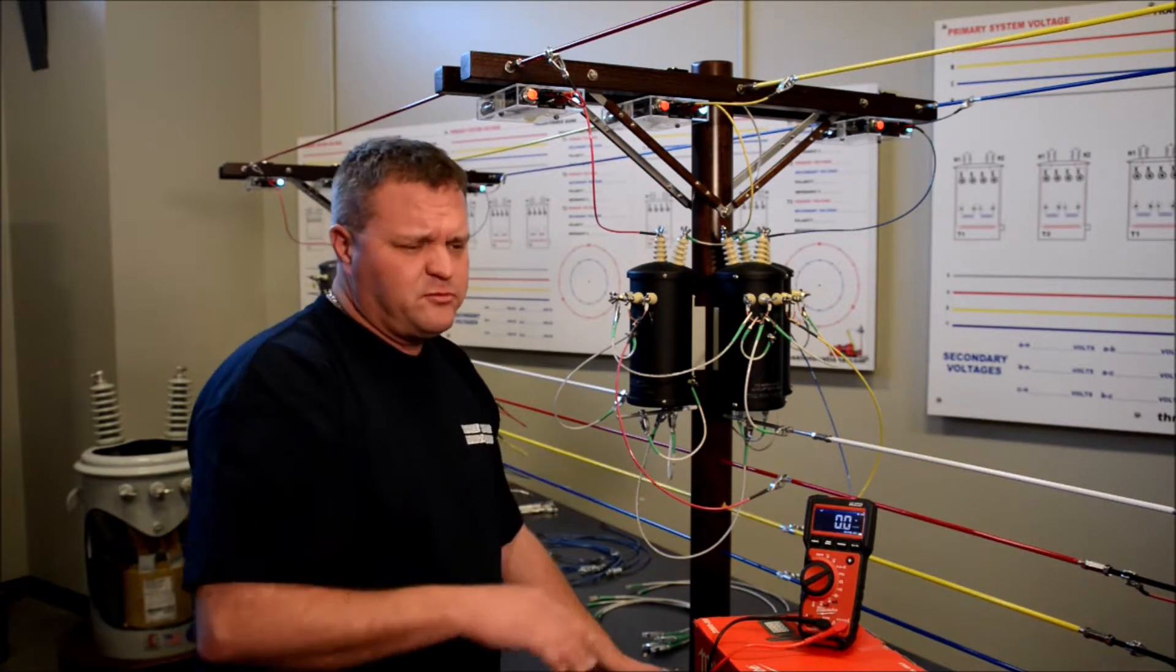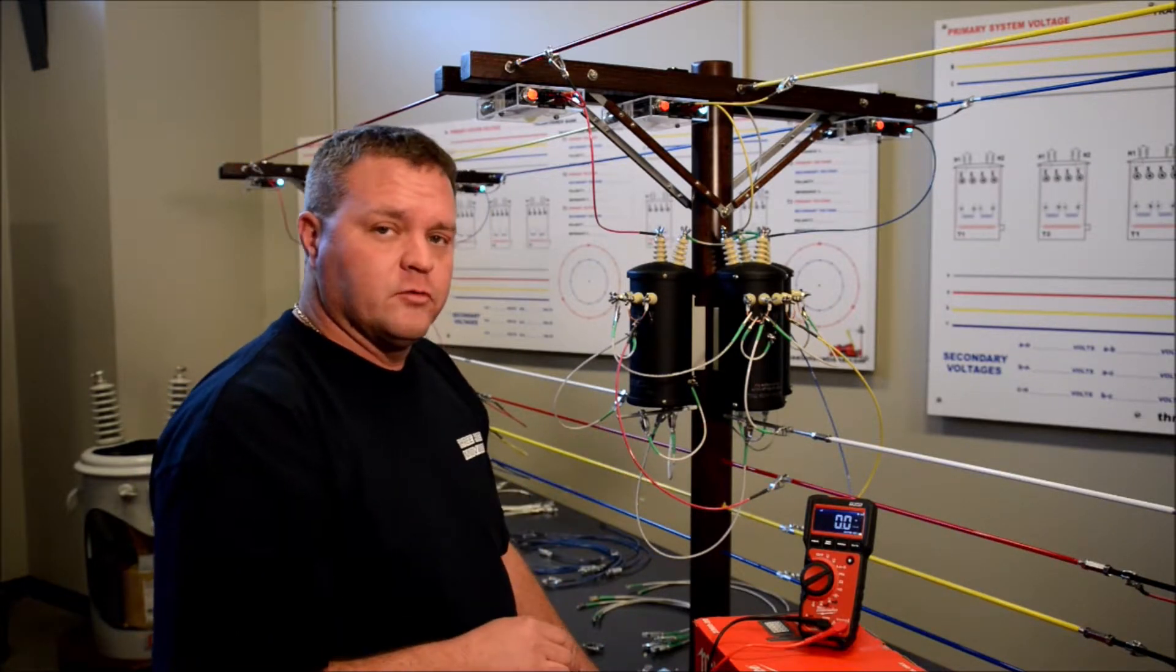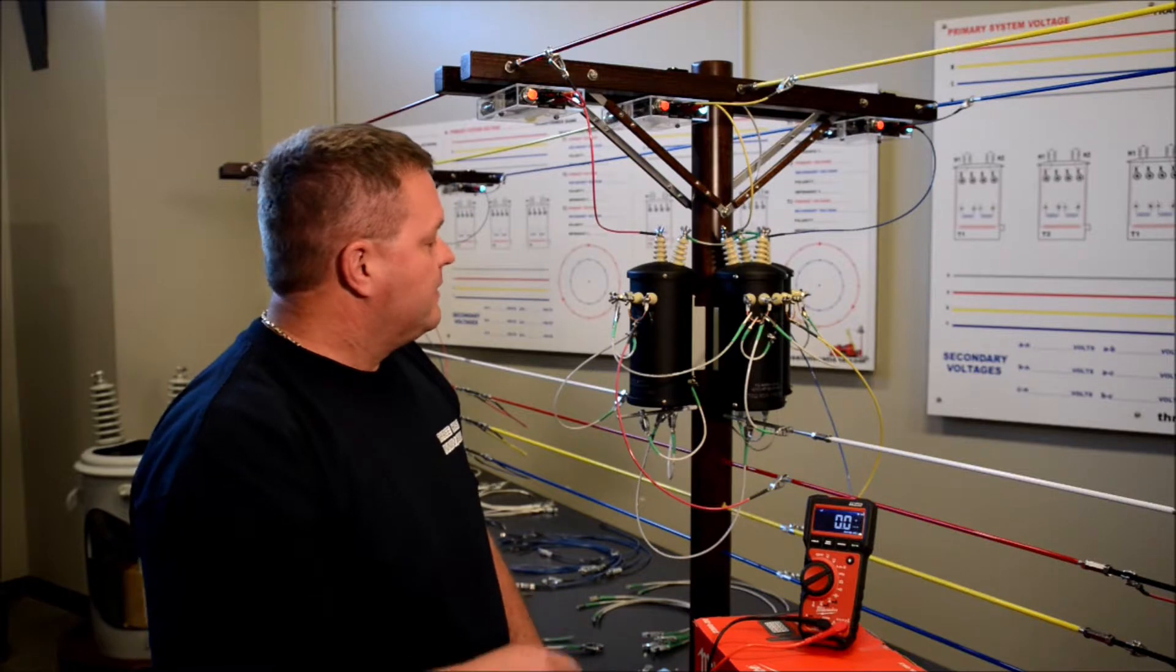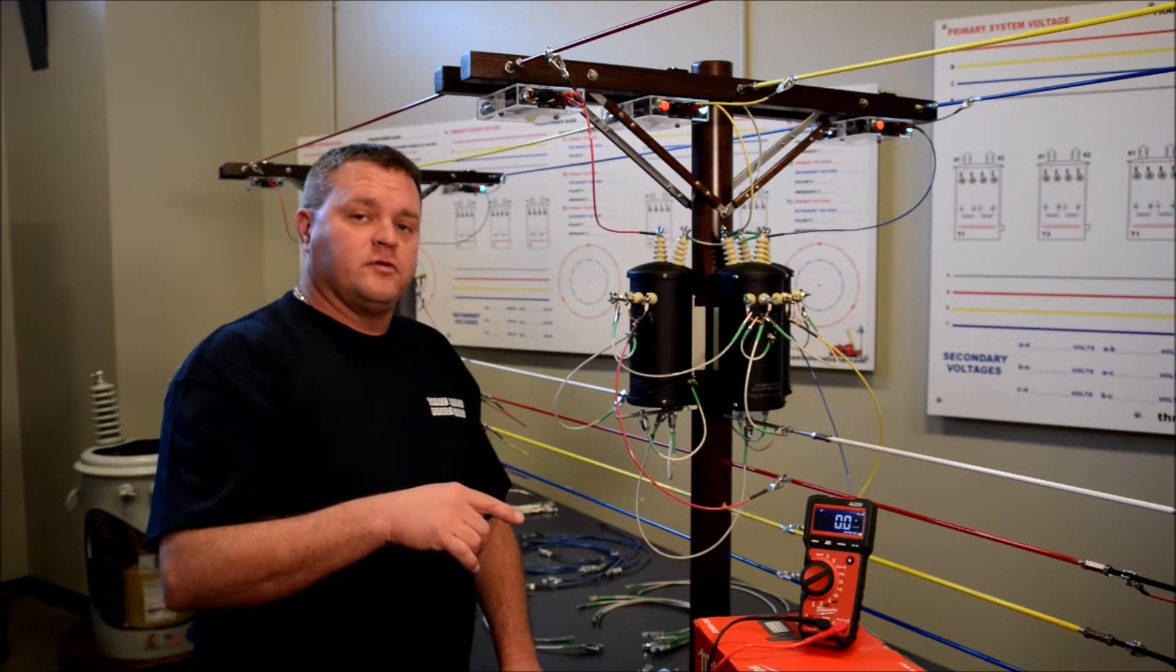Like I said, voltage is a little bit off in the building today. We got a lot of equipment running in this building, but those voltages are acceptable for what we're doing, especially with these little no-load transformers. Now what we're going to do is de-energize the bank and I'm going to float the high side ground.